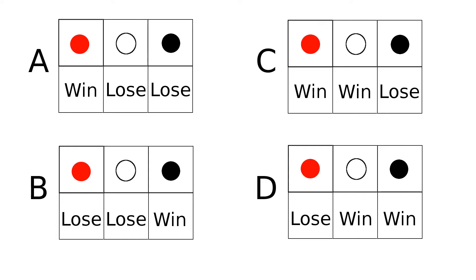If you preferred options A and D, then congratulations, you suffer from the ambiguity effect, like the rest of us. To see why such a choice is actually irrational, let's look at the choices again. If you prefer A to B, then you are in effect betting that there are more red than black balls.